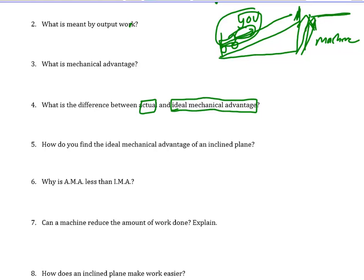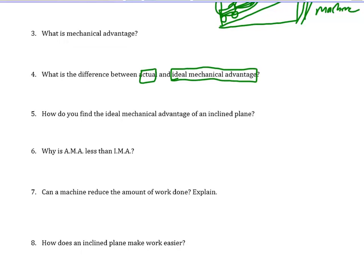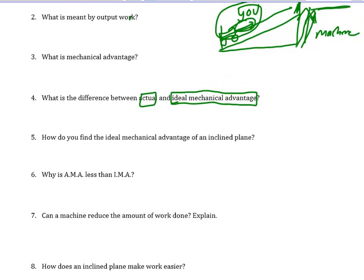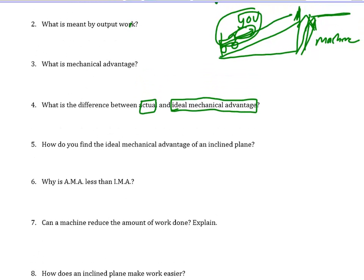There's no such thing as a perfect machine, but you can get pretty close sometimes. The ideal mechanical advantage of an inclined plane — well, since it's ideal, the best it could possibly be: the job is to lift something this high, but you're actually pushing something this far. The ratio of the distances lets you figure that out. So it's input distance divided by output distance.